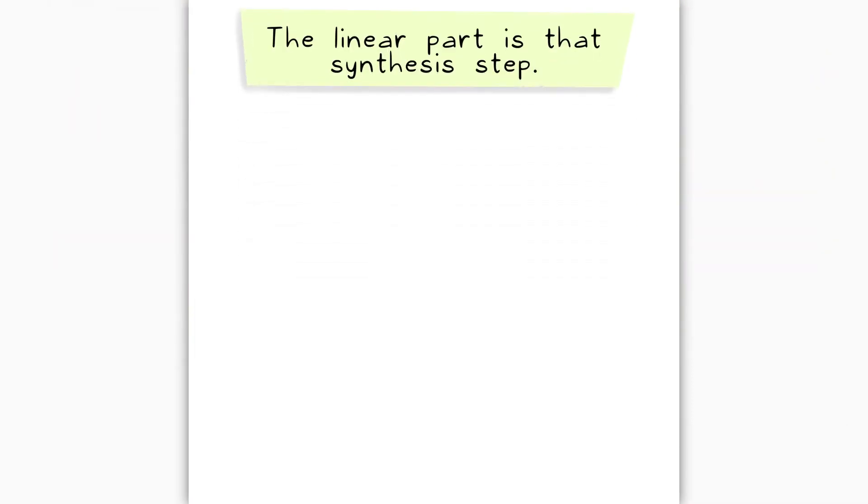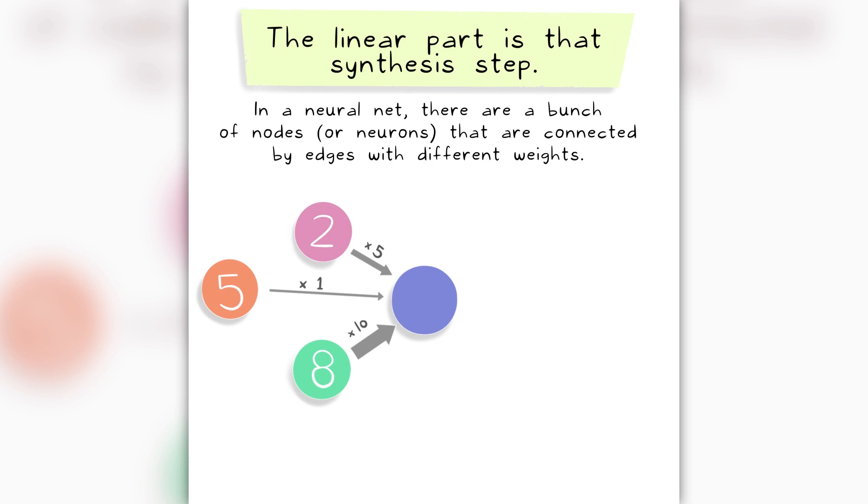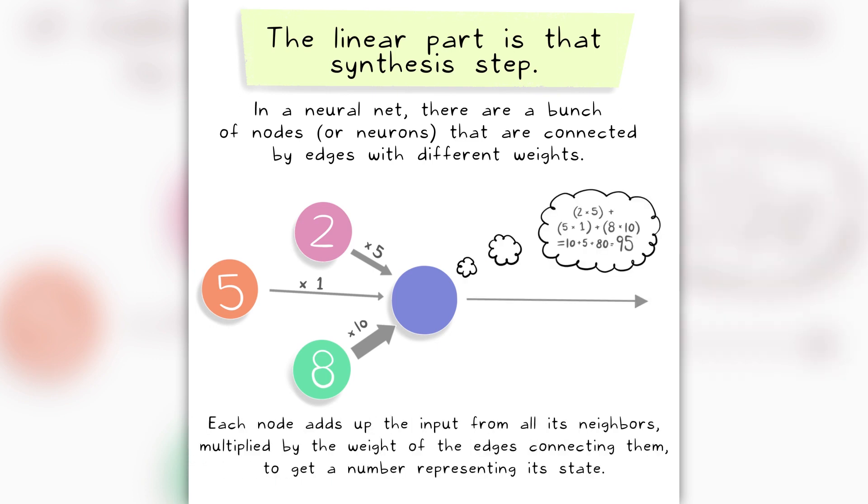The linear part is that synthesis step. In a neural net, there are a bunch of nodes, or neurons, that are connected by edges with different weights. Each node adds up the input from all its neighbors, multiplied by the weight of the edges connecting them to get a number representing its state.